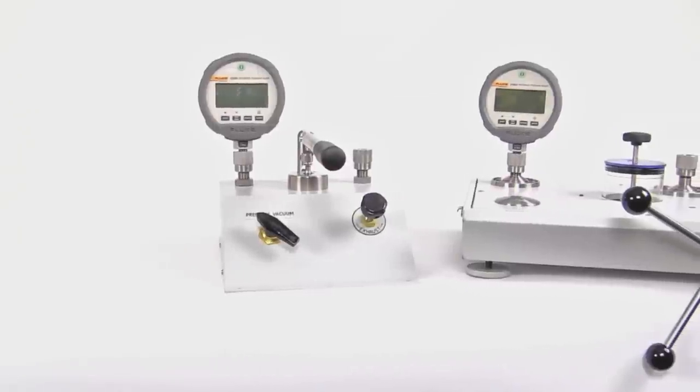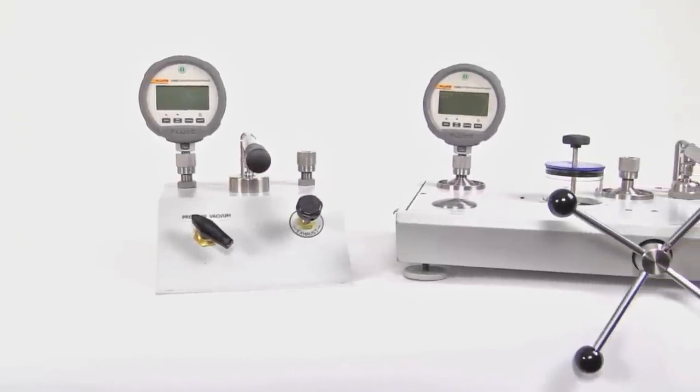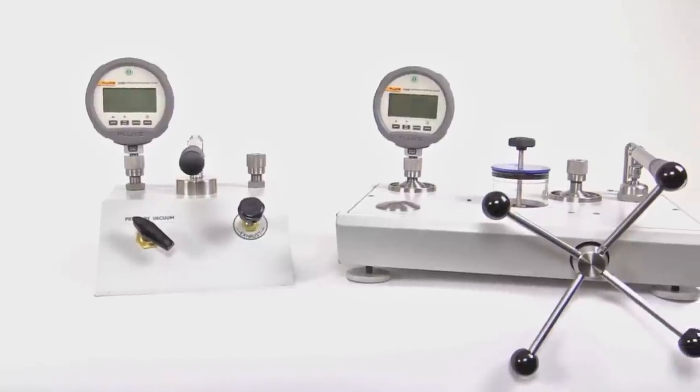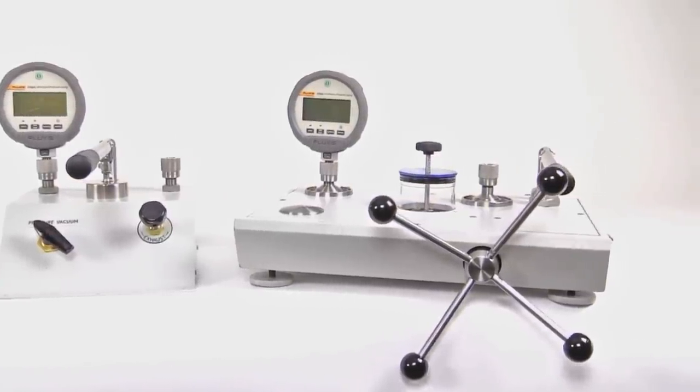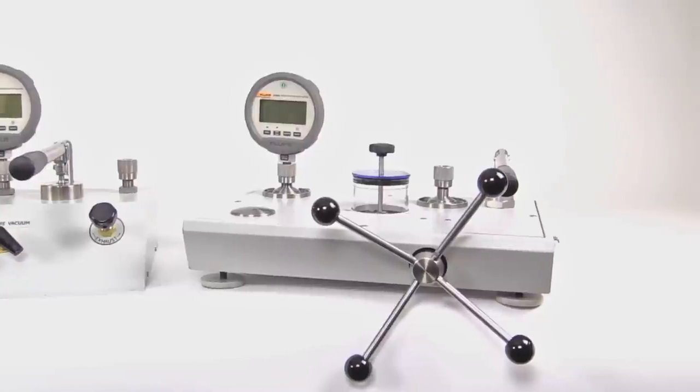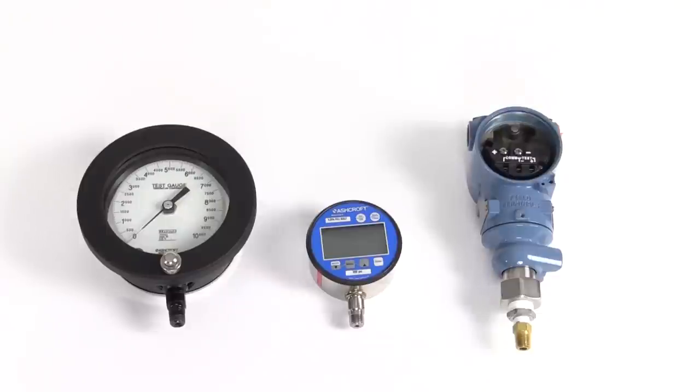Fluke calibration's P5500 pressure comparators and 2700G reference pressure gauge combine to provide an economical, easy-to-use alternative to traditional deadweight testers and pressure controllers. They can be used to perform a wide range of pressure calibrations including dial gauges, digital test gauges, and pressure transmitters.